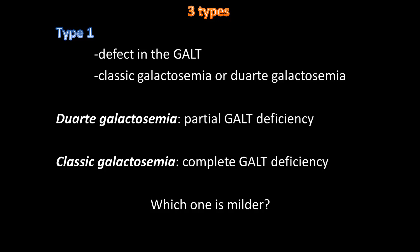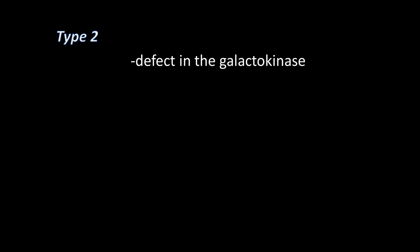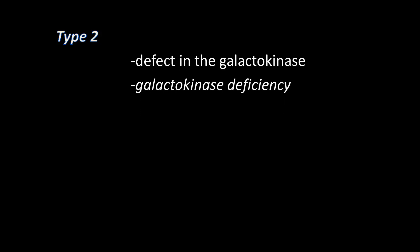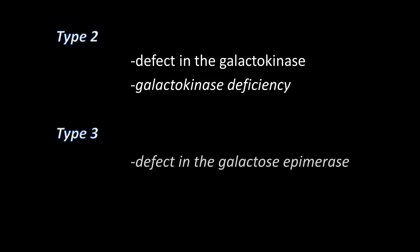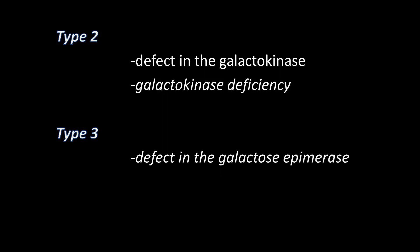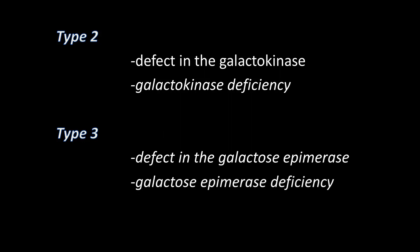Fortunately, Duarte galactosemia is more common than classic galactosemia. Type 2 is when the defect is in the enzyme galactokinase, and it is called galactokinase deficiency. Type 3 is when the defect is in the galactose epimerase enzyme, and it is called galactose epimerase deficiency.